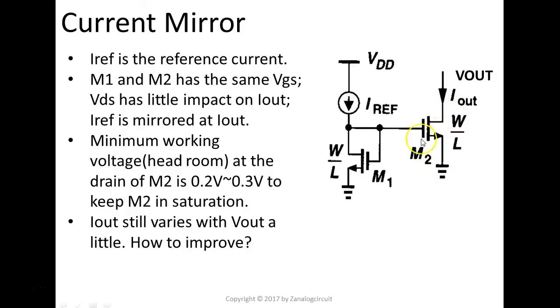In order for M2 to be in saturation region, Vout here needs to be essentially—the drain of M2 needs to be 0.2 or 0.3 volts higher than the ground to keep M2 in saturation.